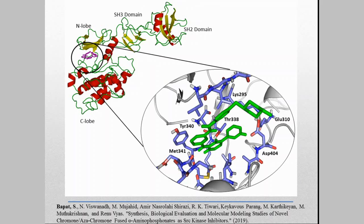What we do in docking is that we search for an appropriate binding of the ligand that fits energetically and geometrically to the protein binding site. In this case, this is your protein binding site, the green one is your ligand. This is zoomed here and the blue ones are nothing but your interacting amino acids.